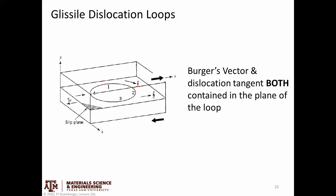However, the tangent direction vector curves around the loop: over here it points one way, over there it points another. The direction vector has to curve and be continuous all the way around the loop.